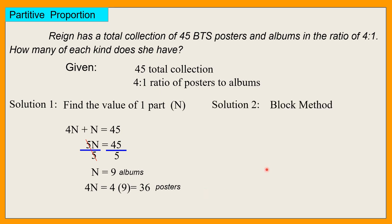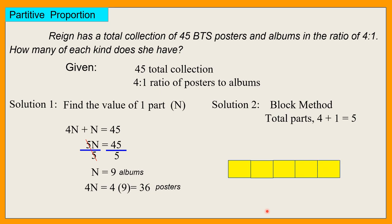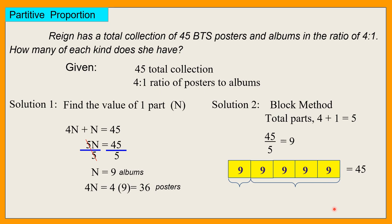Using block method: bibilangin ko ilang parts — 4 plus 1, that is equal to 5 parts. So gawa tayo ng 5 blocks. This is equal to 45, so dapat i-equate lagi sa total. Ang 45 i-divide natin sa 5 blocks — 45 divided by 5, and that is 9. So 9 bawat isang block. 1 part which is for the album, and 4 parts ang para sa posters. Meron siyang 9 albums at 36 posters. Pareho lang dito sa kabila.